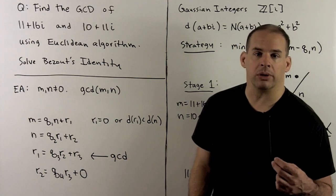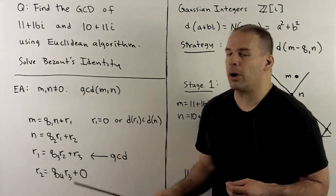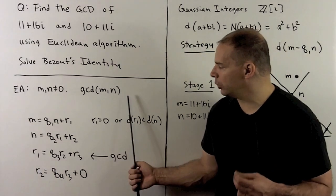Let's recall the Euclidean algorithm. So we're in a Euclidean ring, we choose m and n non-zero, and we want to solve for the greatest common divisor of m and n. This is only defined up to a unit.